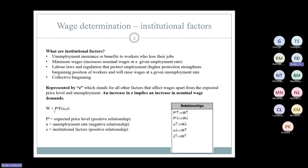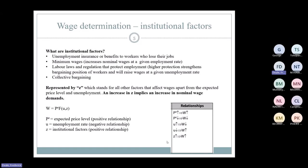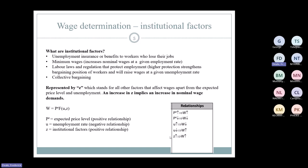The wage function is: W = PE × F(u, z). There's a positive relationship with price expectations — if PE goes up, wage demands go up. There's a negative relationship with the unemployment rate — if unemployment goes up, wage demand goes down, and vice versa. Institutional factors Z have a positive relationship — if things like unemployment insurance increase and benefit workers' bargaining position, wages increase. It's better to understand these relationships than to just memorize them.